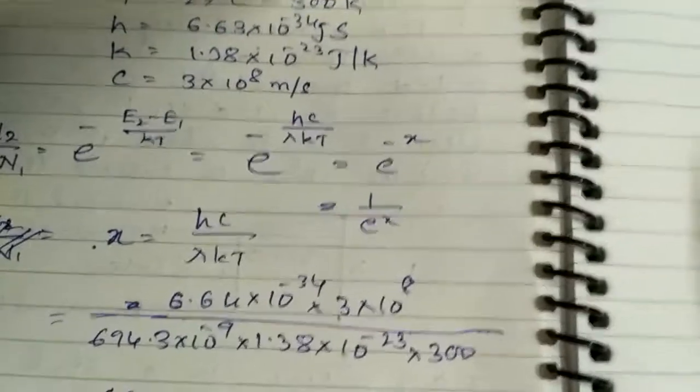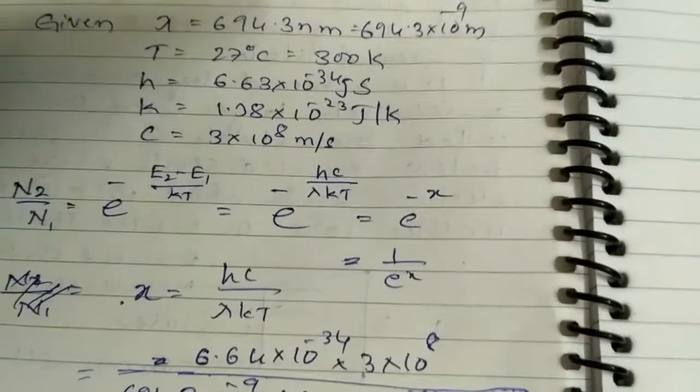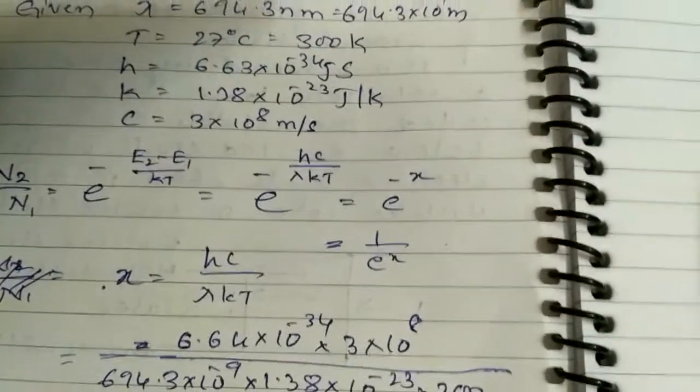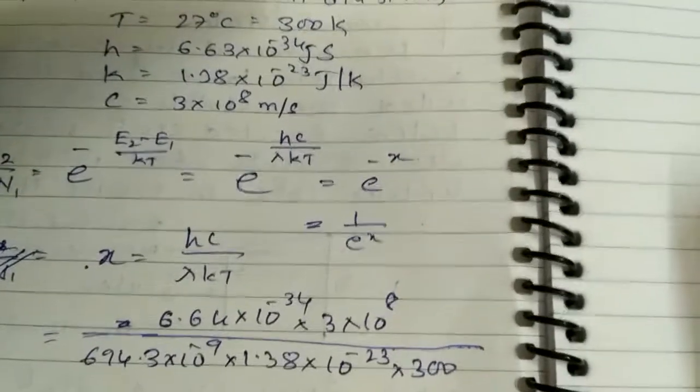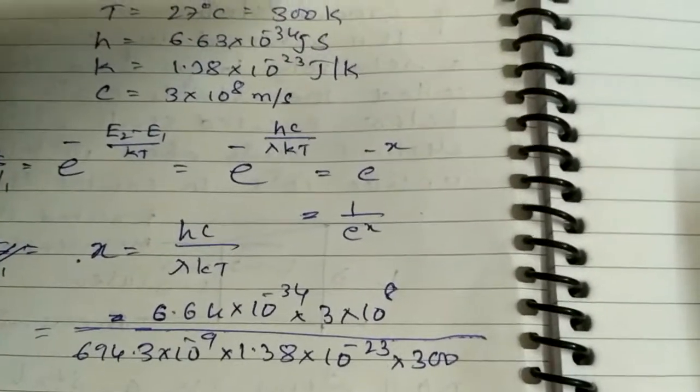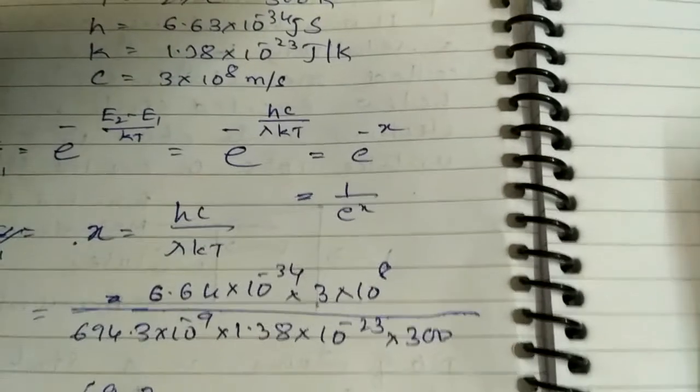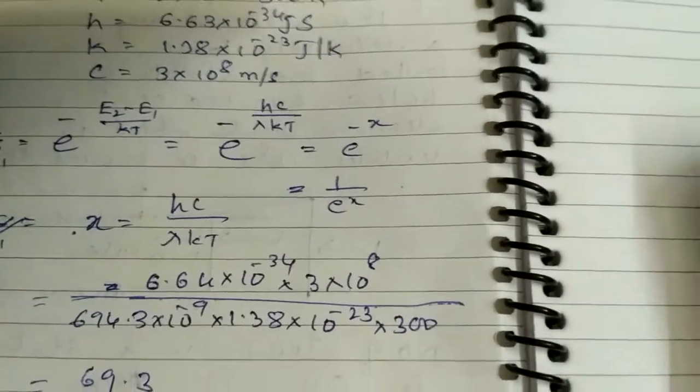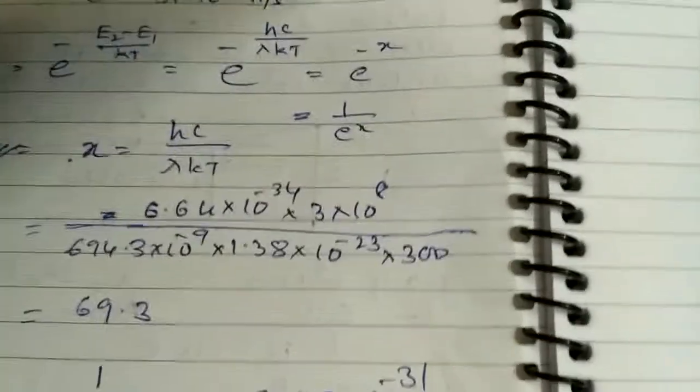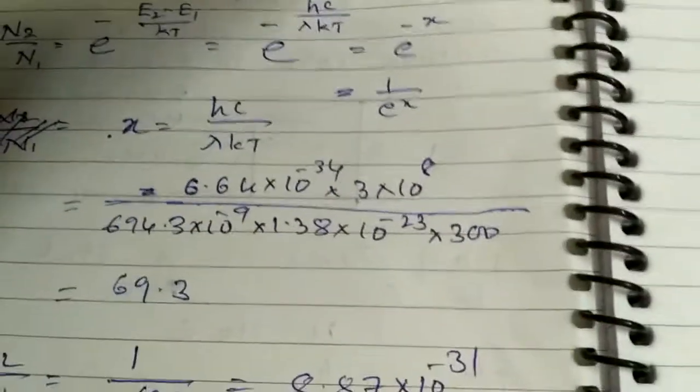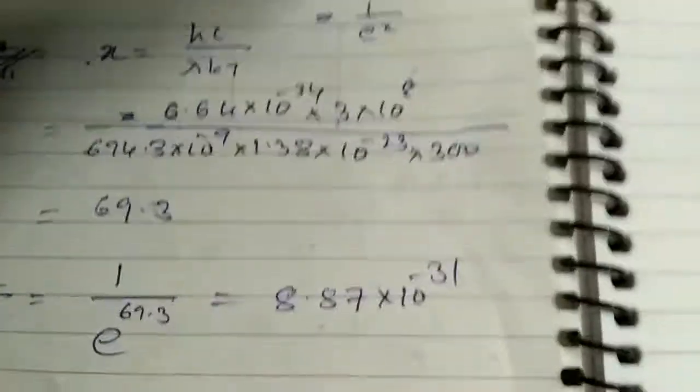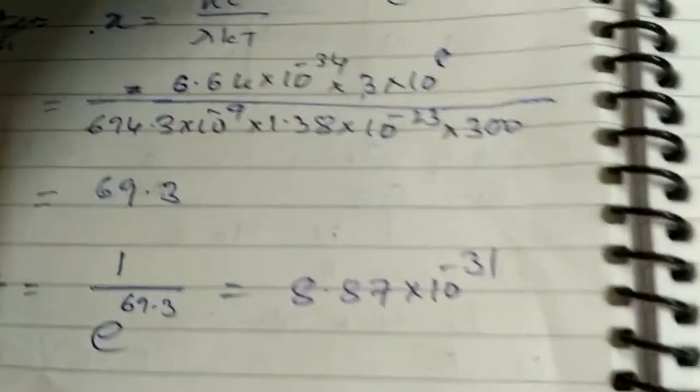The equation becomes e^(-hc/λkT). Let hc/λkT = X. Then e^(-X) = 1/e^X. Substituting values for h, c, λ, k, and T, we get X = 69.3.